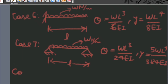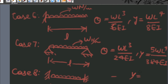Case number eight: when a fixed beam of span L is subjected to a uniformly distributed load of W Newton per meter, then the deflection is given by WL⁴ upon 384EI.